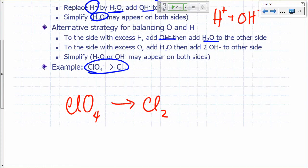ClO4 minus gives you Cl2. What should I do here? First step, balance all atoms besides oxygen and hydrogen. So what do I do? I need two chlorines, right? And the next step is this. To the side with excess hydrogen, you add hydroxide. Why? Because that excess hydrogen, combine that with hydroxide, will give you water on the other side. So do I have any excess oxygen here? I don't, so I can't use that.